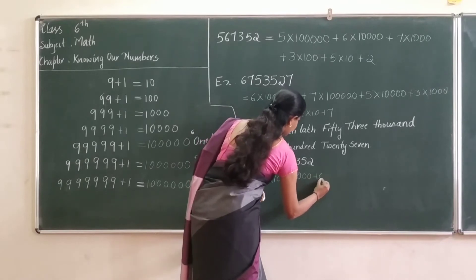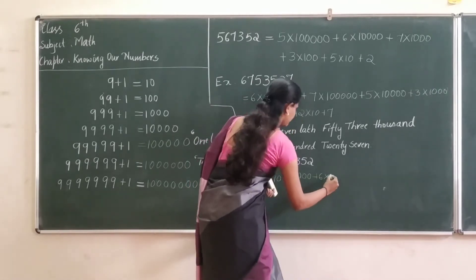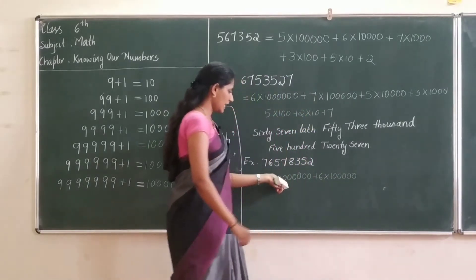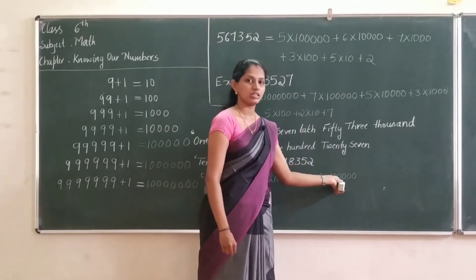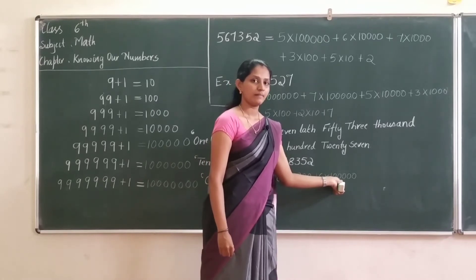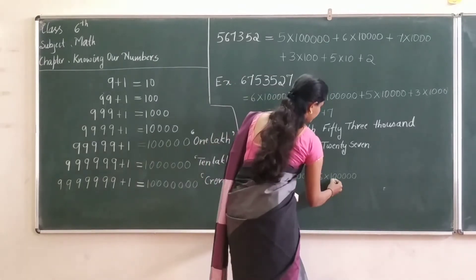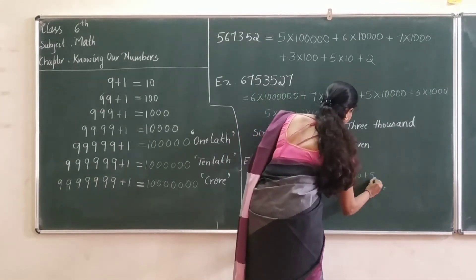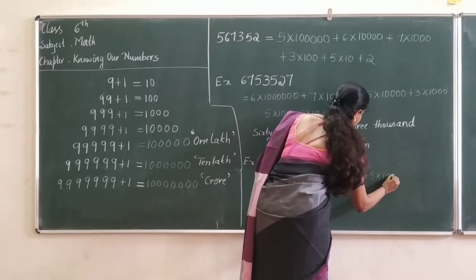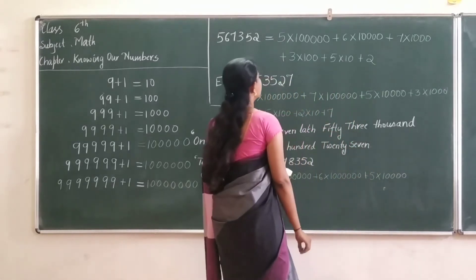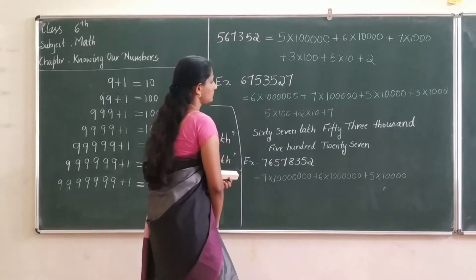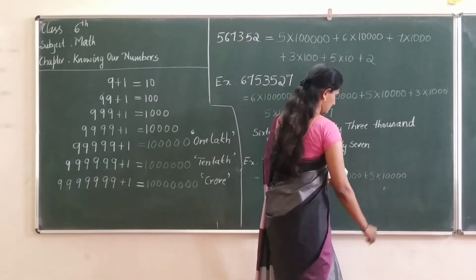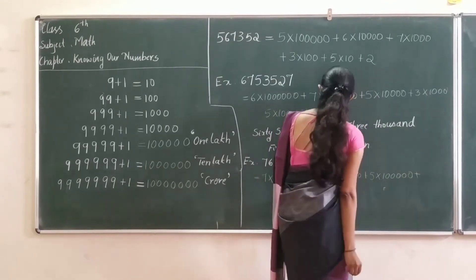Now we are going to write it in an expansion. 7 into crore — that is the 8-digit place — plus 6 into the 7-digit place, then 5 into the 6-digit place.